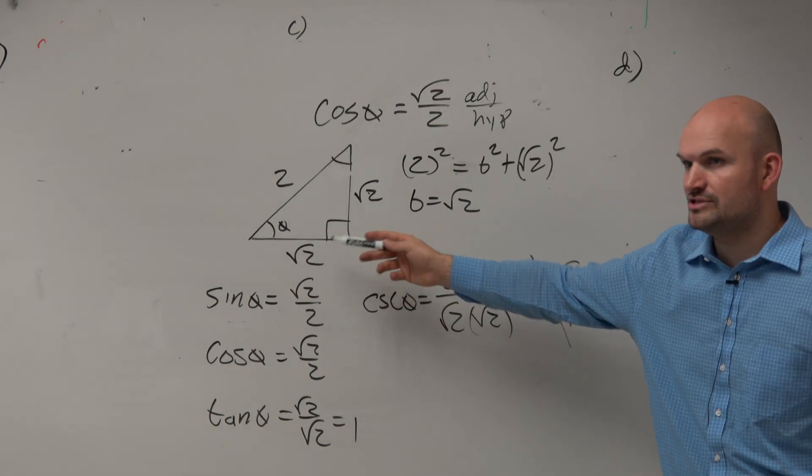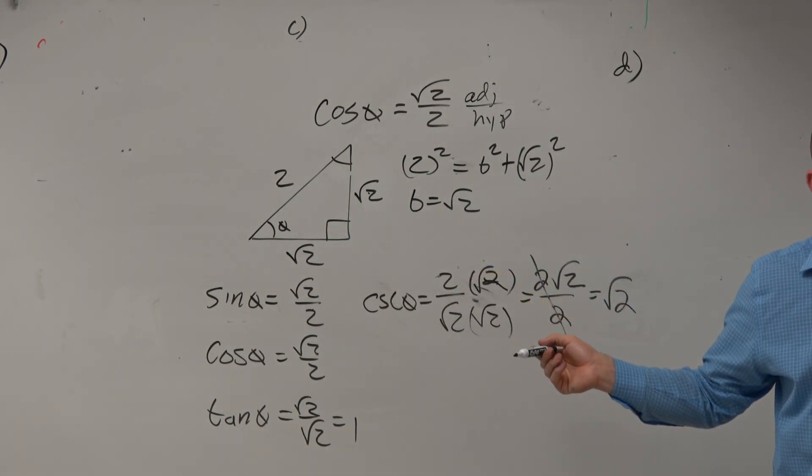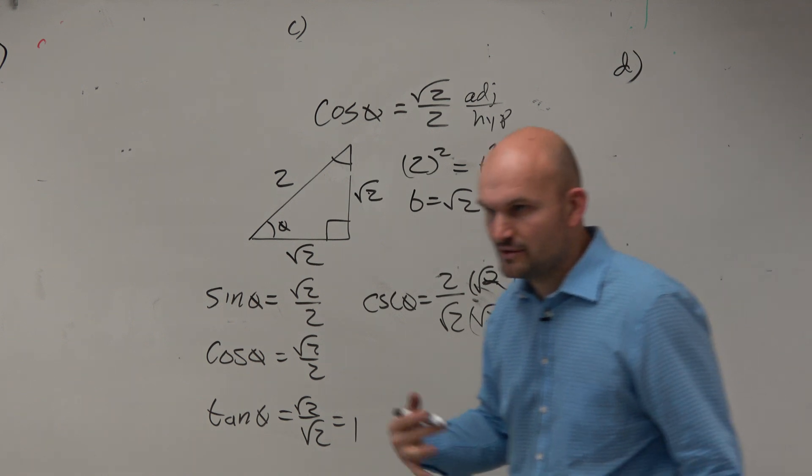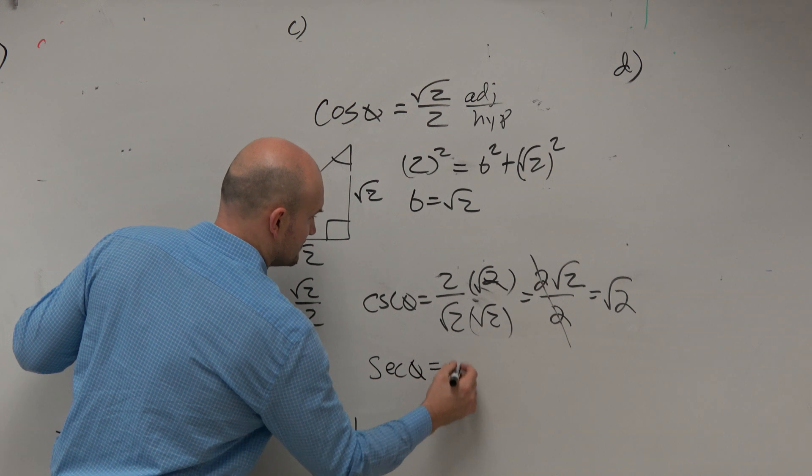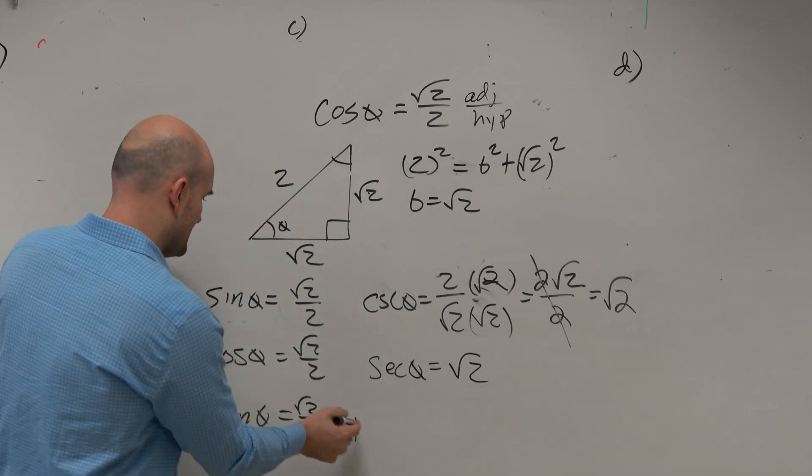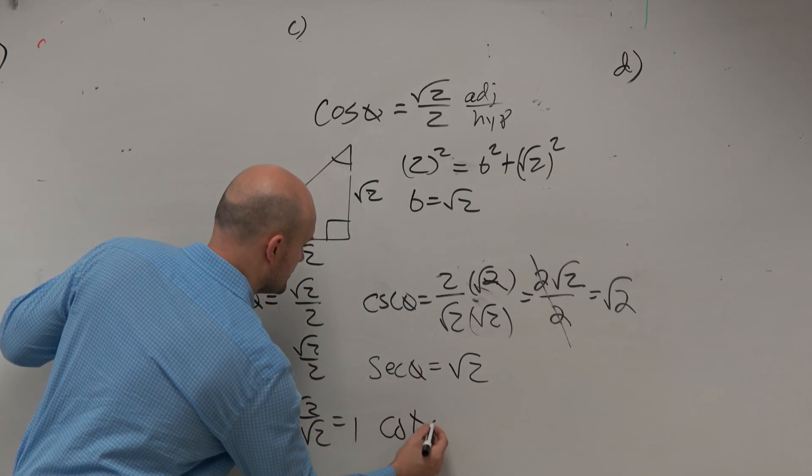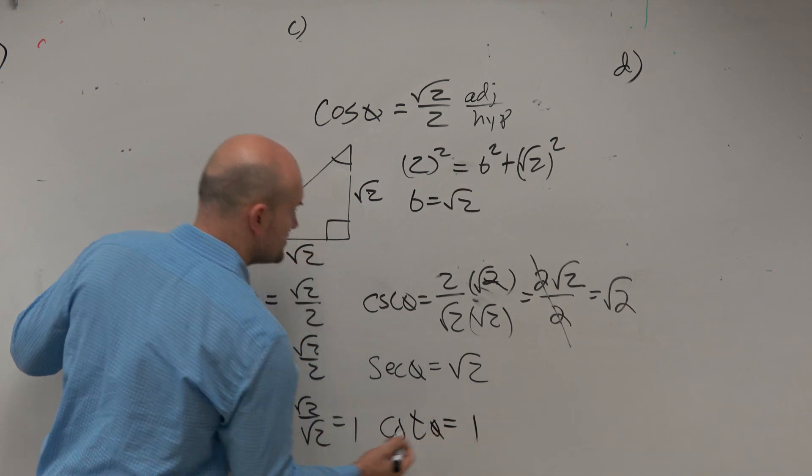Now, is the secant going to be the same as the cosecant? Yeah. So I'm not going to rewrite the work again, guys. I mean, if you already showed the work once, that's fine. Same idea with cotangent. That's just adjacent over hypotenuse. That's going to equal 1.